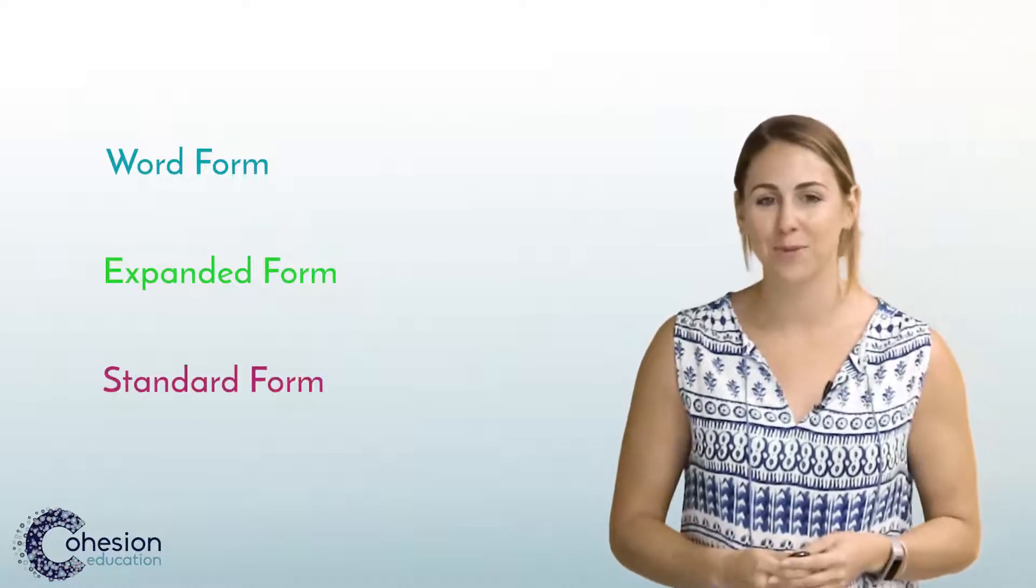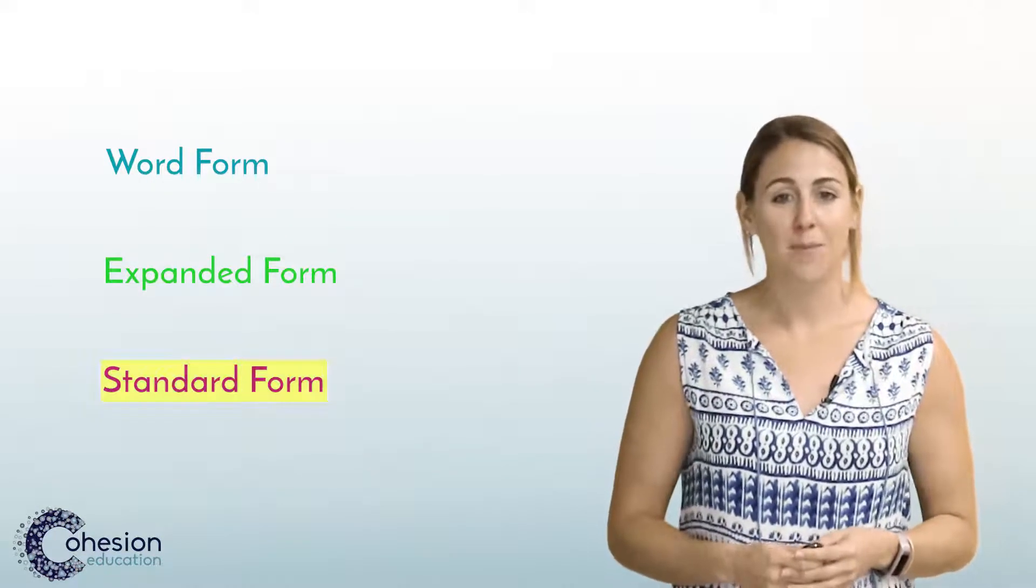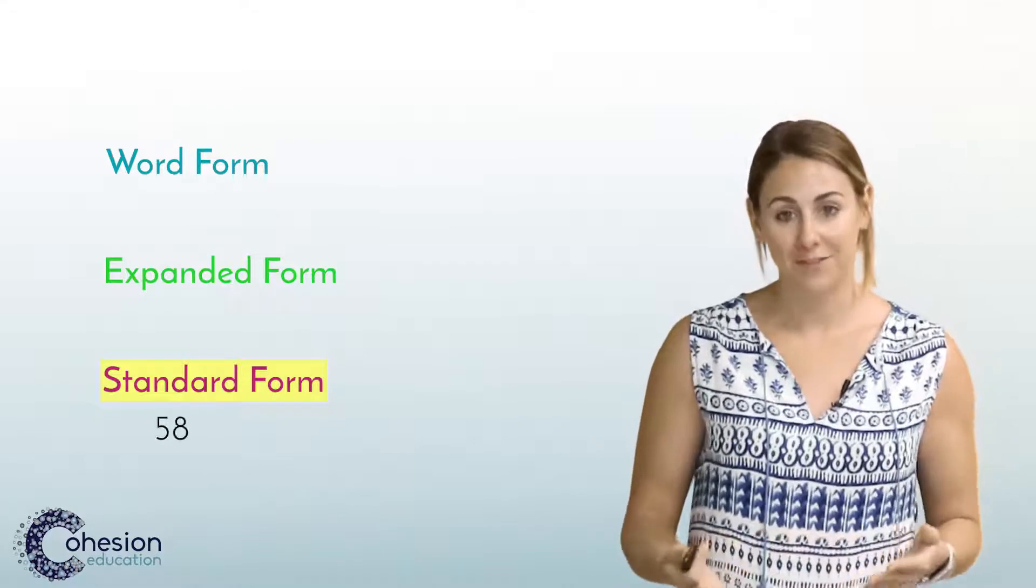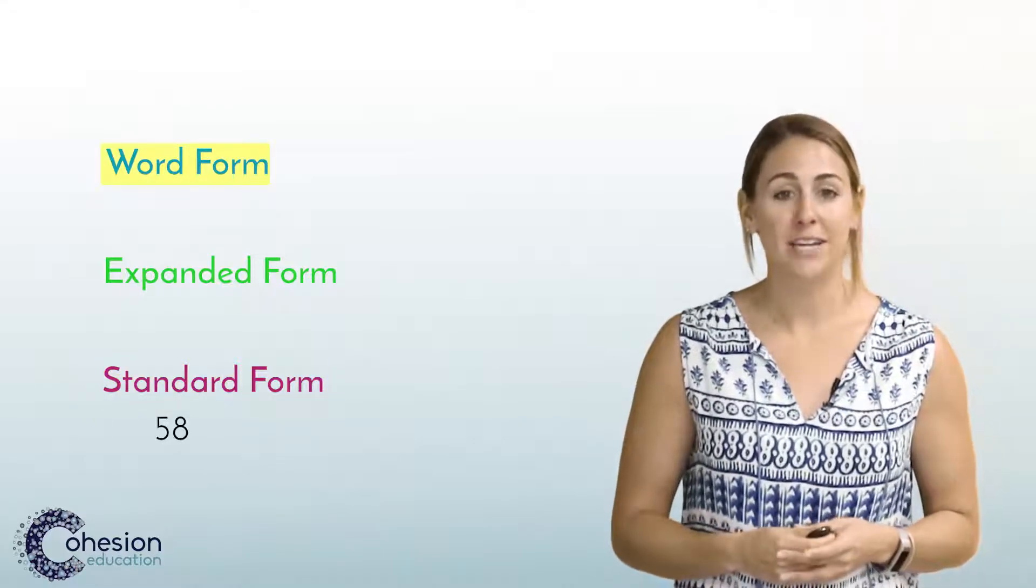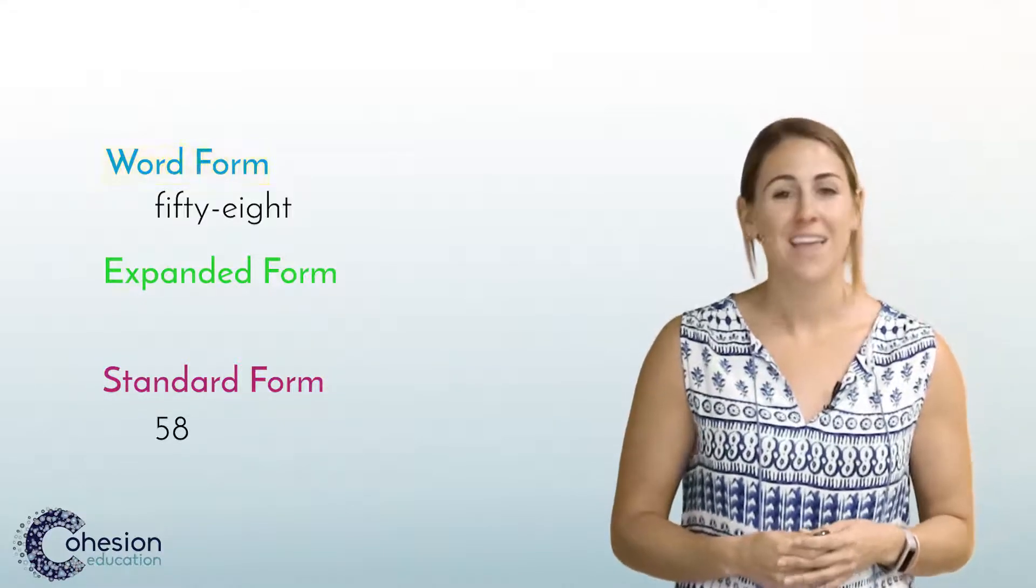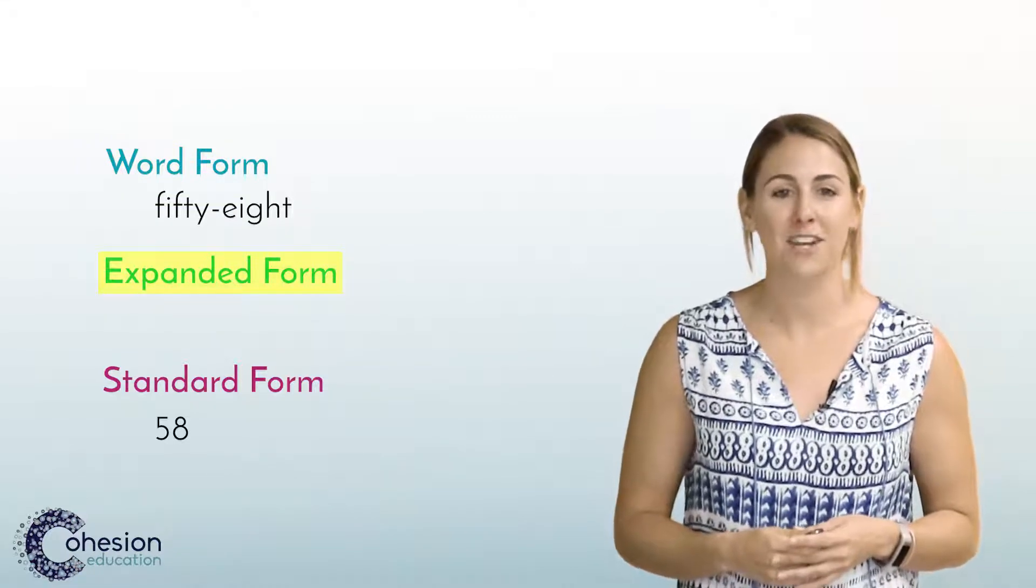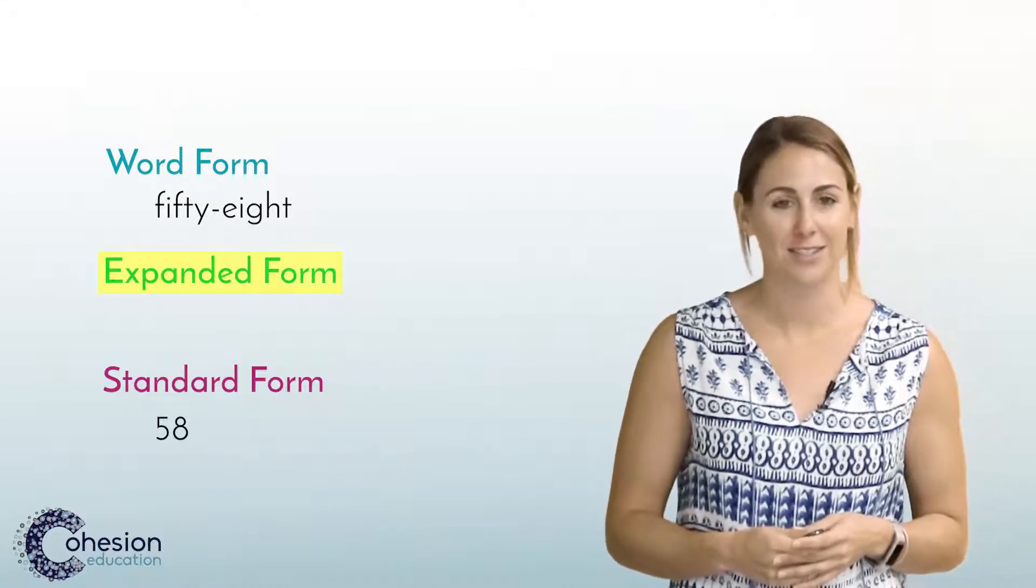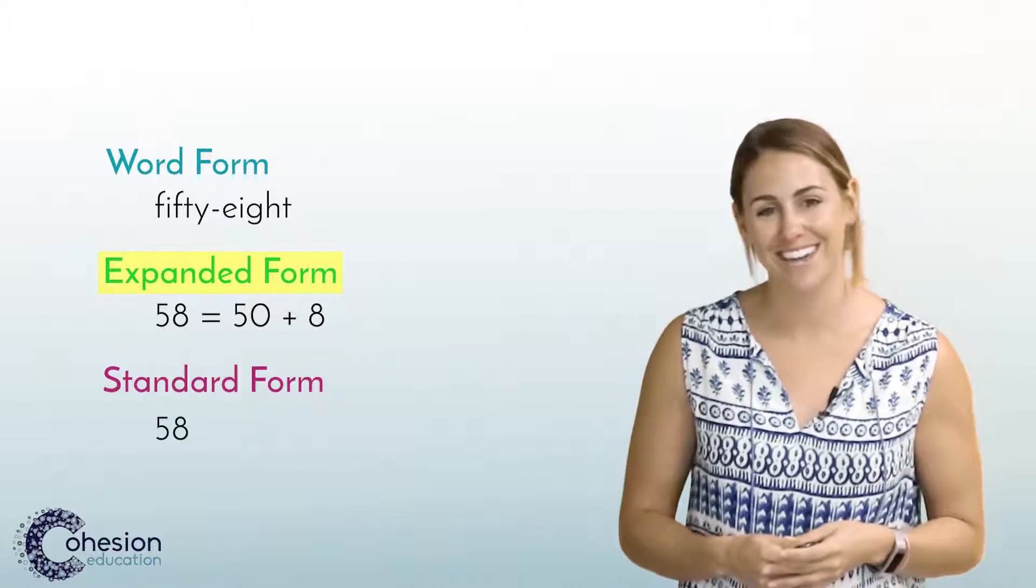In this lesson students will write two-digit numbers in word form, expanded form, and standard form. Standard form is writing the actual number 58. Word form is using words to write the number. Expanded form is breaking apart the number into tens plus ones: 58 equals 50 plus 8.